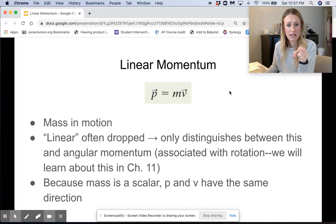So because mass is a scalar, and like I said, momentum and velocity are vectors, that means whatever direction the velocity vector's in, that will be the same direction as the momentum vector.